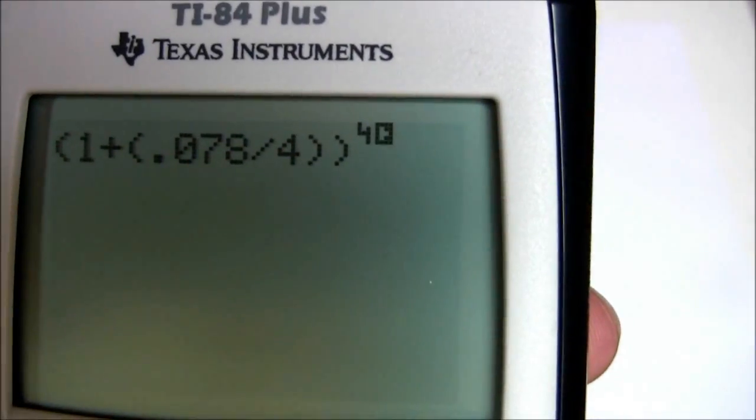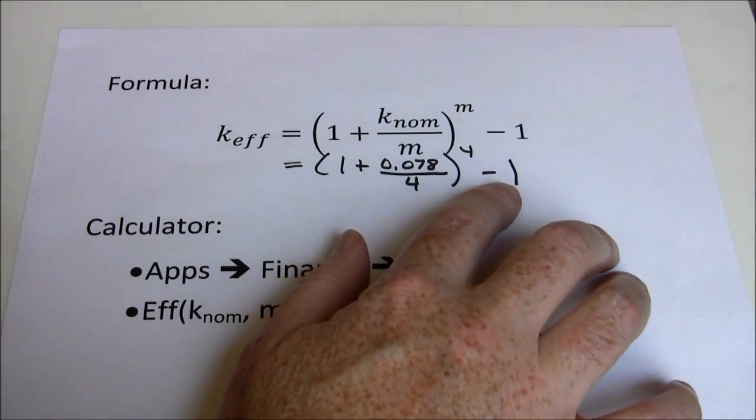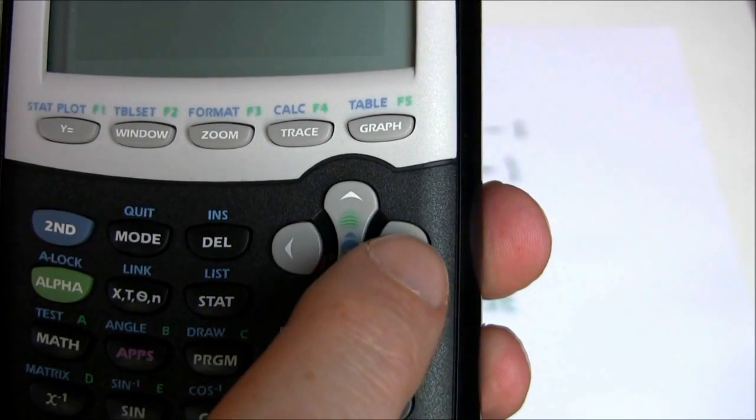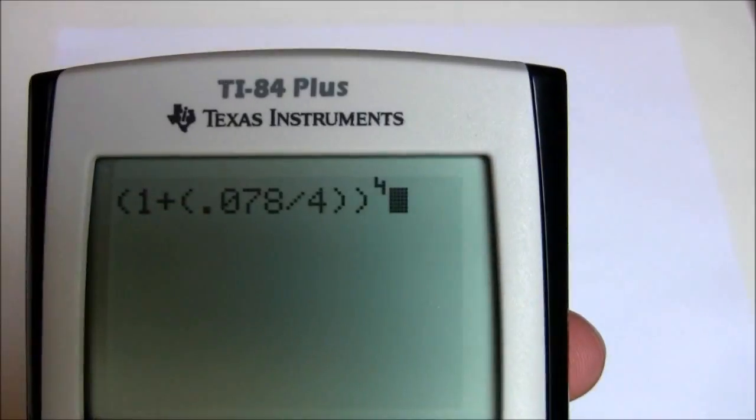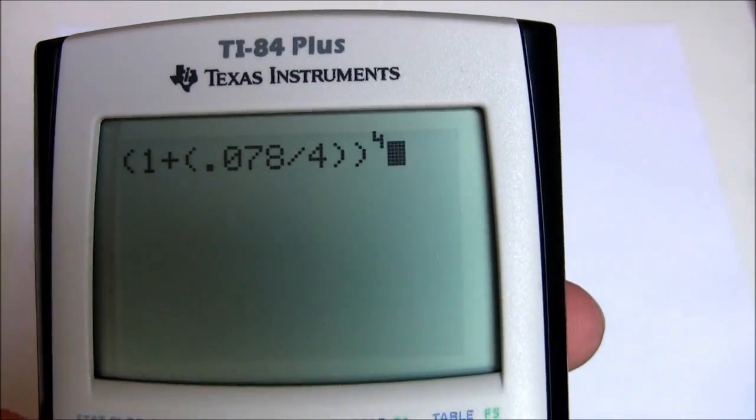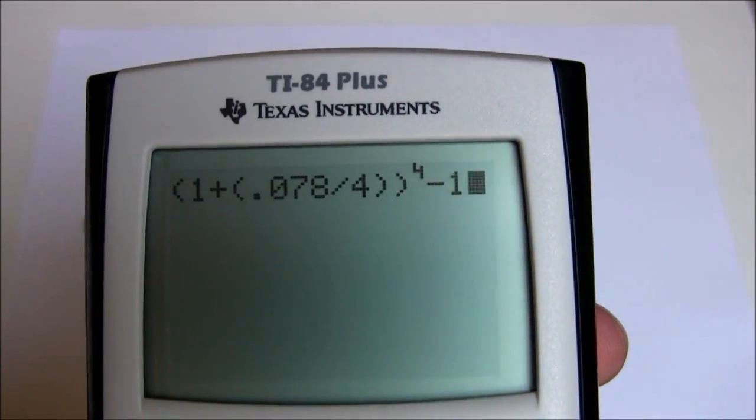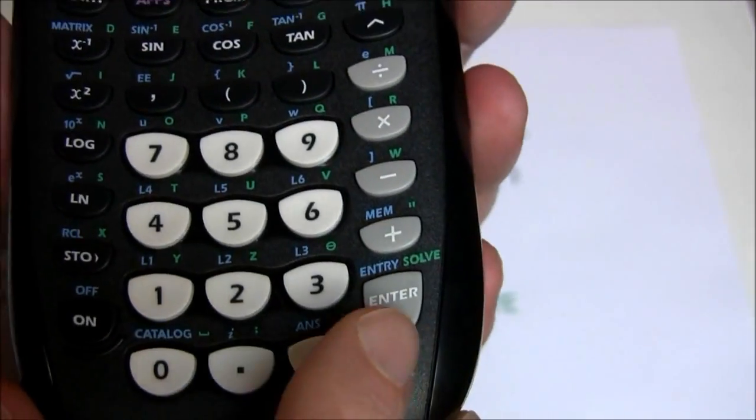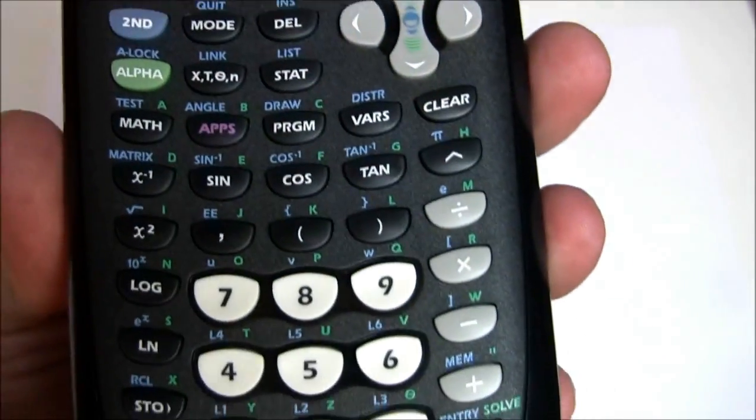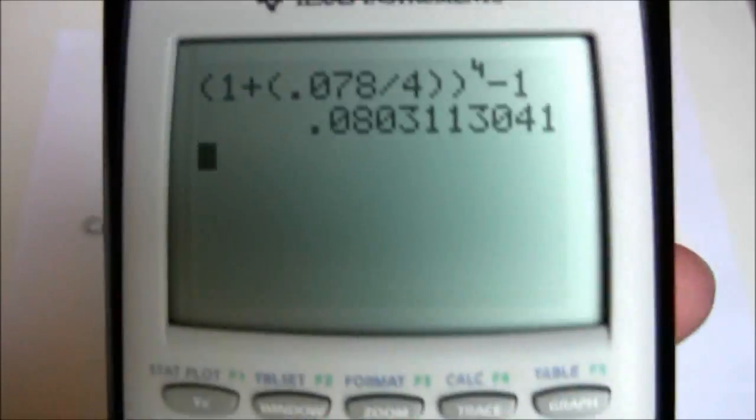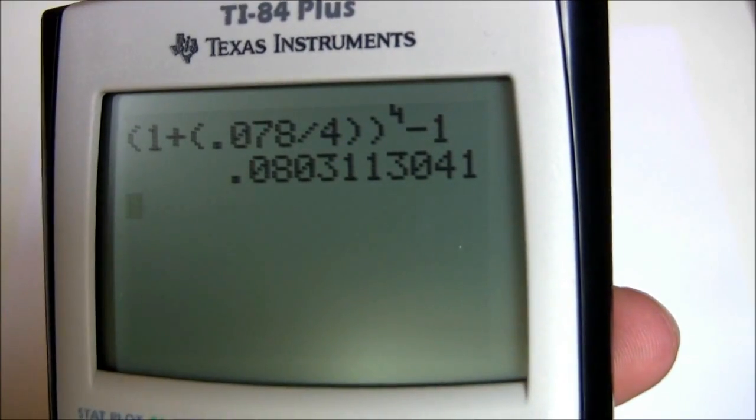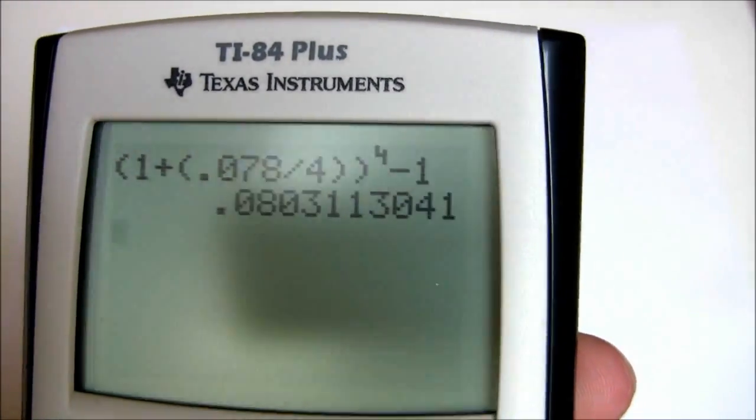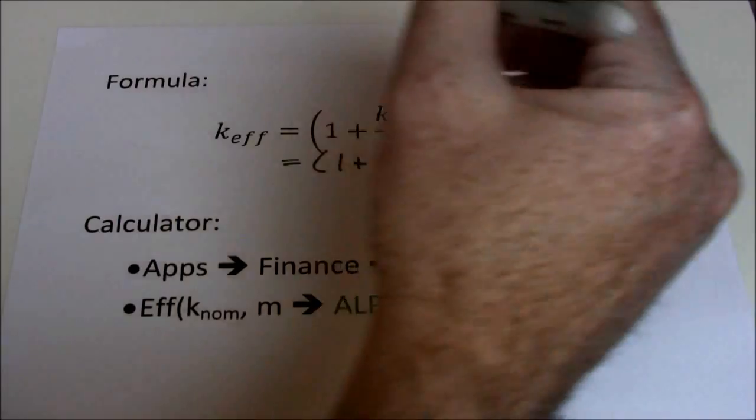Now you can see it is asking me for what power I want to raise it to. That's 4. Now I want to move back. Make sure this isn't in the exponent. So I'm going to use the direction pad. Just press the right arrow. That will get it off of the exponent. Subtract off 1. Now I want to do the alpha solve in order to get my answer.